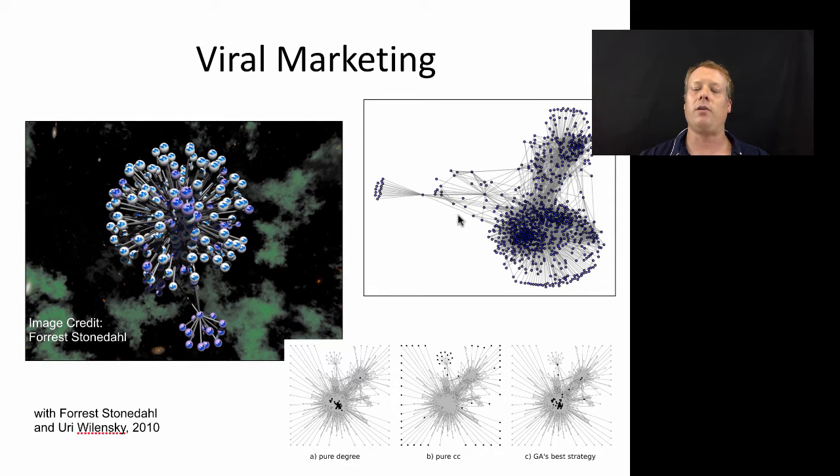What we found in that network by doing a bunch of simulations using agent-based modeling was that contagion spread quickest through that network when the people who are targeted with a message that you are trying to spread through the network had a lot of friends, but their friends didn't know each other. They were kind of these boundary-spanning individuals who could spread the message through the entire network.